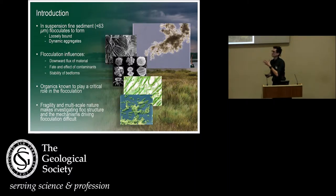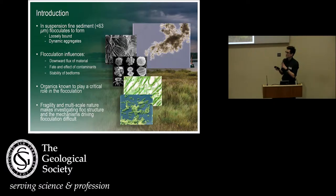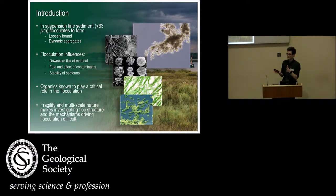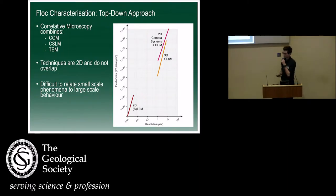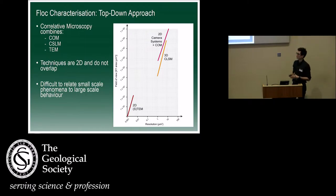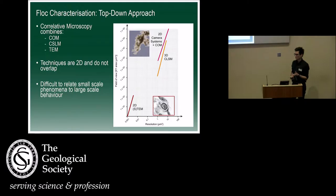What's difficult is, because they're so fragile and multiscale in nature, it makes investigating them very difficult. The floc properties range from the nanometre scale, with the individual particles that make it up, all the way up to the whole floc structure itself that the particles aggregate to form at the millimetre scale. So previously, to investigate the properties of flocs, what people have tended to do is use a technique known as correlative microscopy, which allows you to characterise flocs at the nanometre scale.